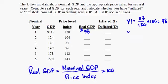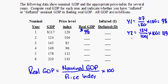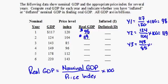For year two, nominal GDP is 124 divided by the price index of 104, multiplied by 100, which equals 119. So real GDP in year two is $119. For year three, nominal GDP is 143 divided by the price index of 85 — which is less than 100 — multiplied by 100, giving a real GDP of 168.